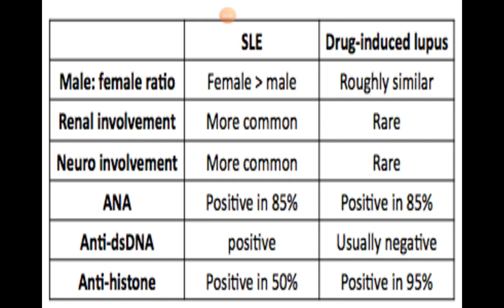Anti-double-stranded DNA is usually negative in drug-induced lupus, with an exception when lupus is caused by biologic medications, where anti-dsDNA can still be positive. Anti-histone antibodies are positive in 95% of drug-induced lupus but can also be positive in SLE itself. Therefore, focus on the negative predictive value: if anti-histone is negative, drug-induced lupus is less likely.